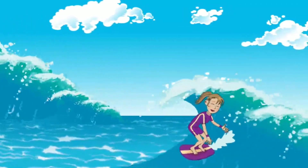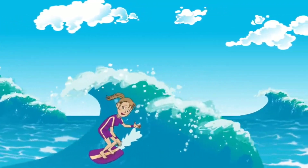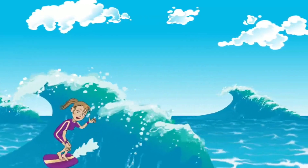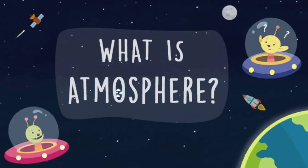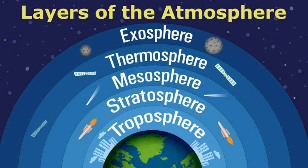Approximately 71% of the Earth's surface is covered by oceans. The Earth is surrounded by a layer of gas called the atmosphere. The atmosphere is divided into five layers based on composition, temperature, and other properties, and they are: the troposphere, the stratosphere, the mesosphere, the thermosphere, and the exosphere.